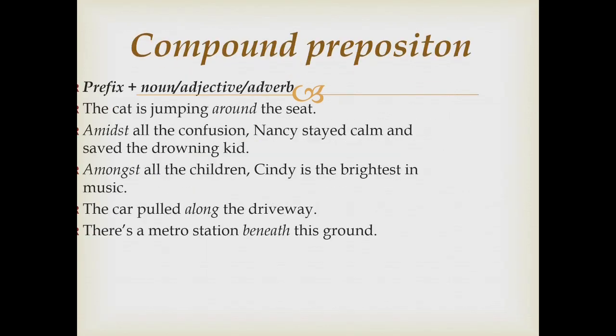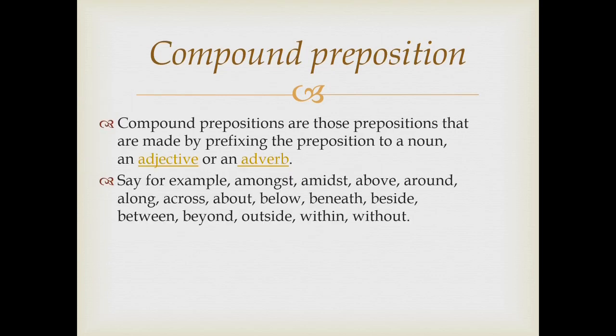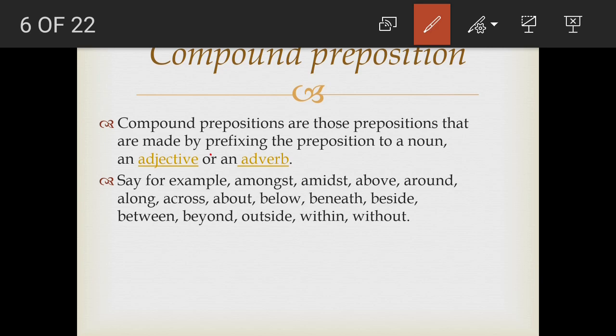Compound prepositions are those prepositions that are made by prefixing a preposition to a noun, an adjective, or an adverb. The prepositions which are made by adding a prefix — pre means before, so to add a letter or letters before a word is called a prefix. So prefix plus noun, adjective, or adverb forms a compound preposition.